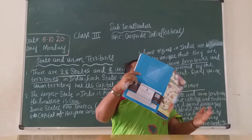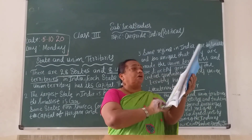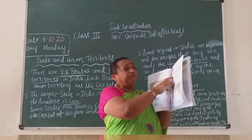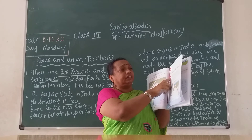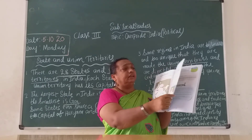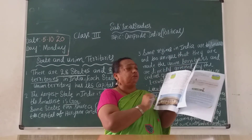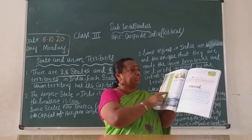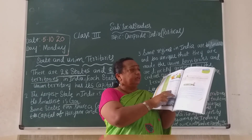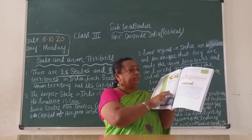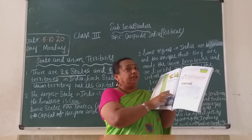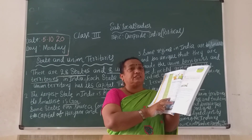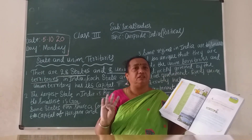Now take out your reader — all the lessons, lesson number 5 is over. Take out your reader and read, go through it. Read the states and their capitals, read the union territories also. Next class I will give you homework children. See you next class, bye children.